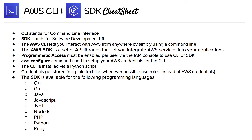We're on to the AWS CLI and SDK cheat sheet. CLI stands for Command Line Interface; SDK stands for Software Development Kit. The CLI lets you interact with AWS from anywhere by simply using a command line. The SDK is a set of API libraries that let you integrate AWS services into your applications.